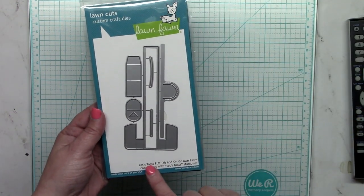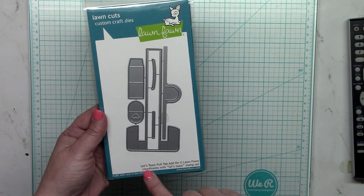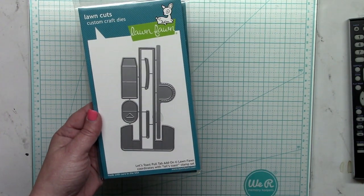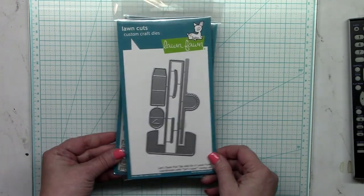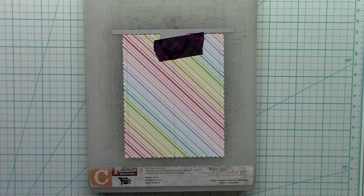And then also they have a Let's Toast pull tab add-on die set and this allows you to pull the toast or the pop tart out of the toaster which is super cute.